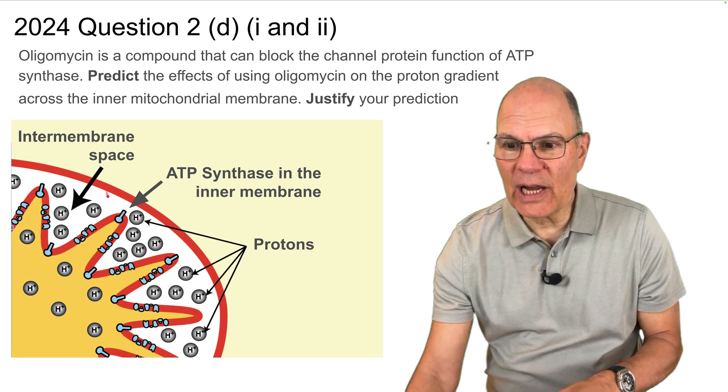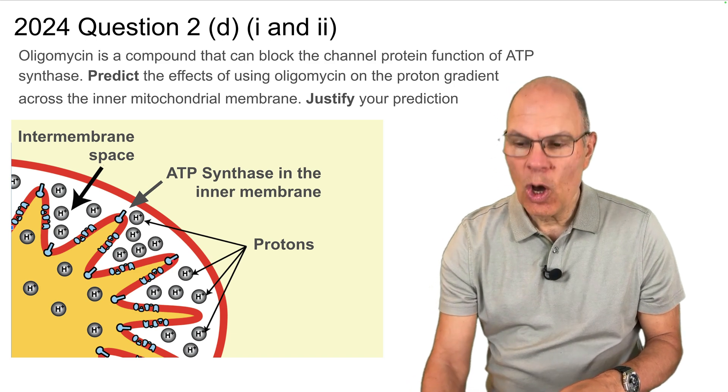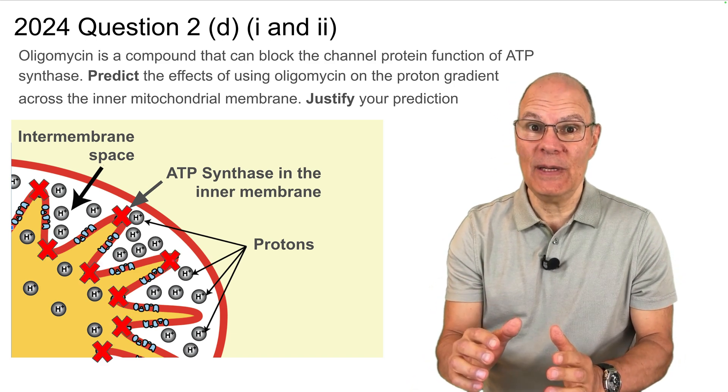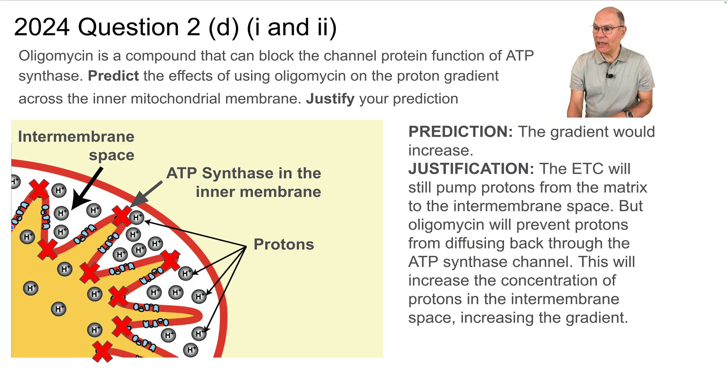So let's look again at this diagram. This is ATP synthase, so is this, so is this, so are all of these shapes. Oligomycin is going to block ATP synthase. What's that going to do? It's going to increase the gradient. Your justification explains why. The electron transport chain will still pump protons from the matrix over here into the intermembrane space, but oligomycin is going to block protons, prevent protons from diffusing back through the ATP synthase channel because they're all blocked. This will increase the concentration of protons in the intermembrane space. That means there'll be more over here, and that will increase the gradient.